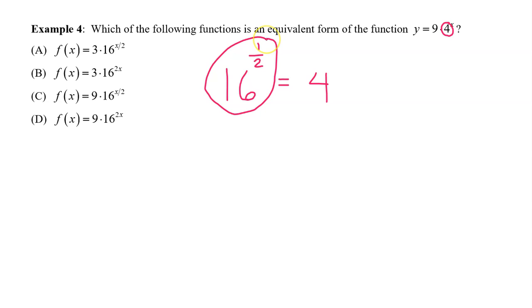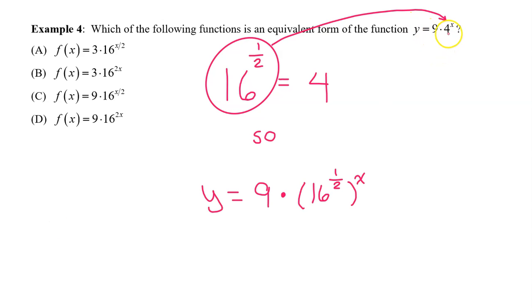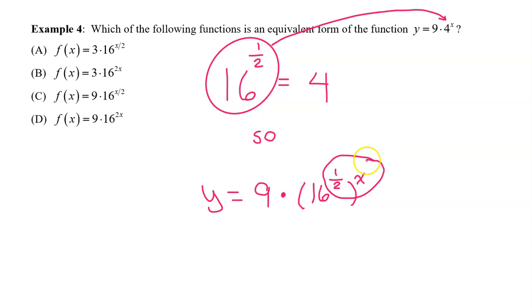The original equation then becomes y equals 9 times 16 to the 1 half power to the x power. When you raise a power to a power, you multiply.